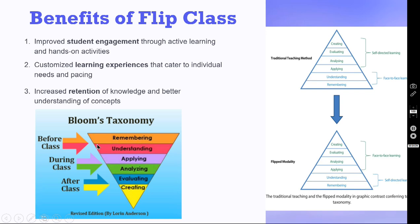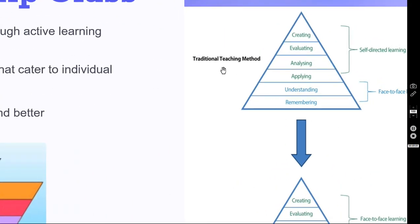This is what is happening in flip class — the inverted Bloom's taxonomy, the inverted pyramid. In the traditional teaching method, self-directed learning — creating, evaluating — happens afterwards. During the face-to-face teaching period, the faculty gives the lecture and students must remember and understand. Applying, analyzing, evaluating and creating all happen at home — that is self-directed learning. This is the traditional method.